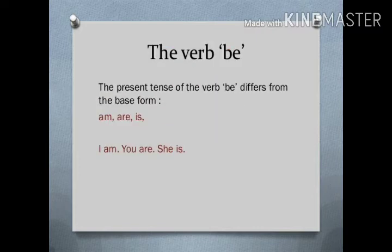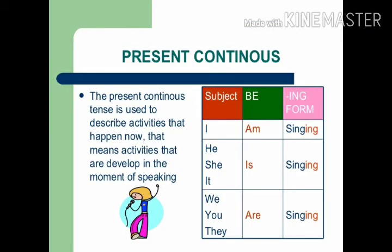The verb 'be': the present tense of the verb 'be' differs from the base form. The verbs 'am', 'is', and 'are' are the simple present forms of the verb 'be'. For example: I am, you are, he/she/it is.